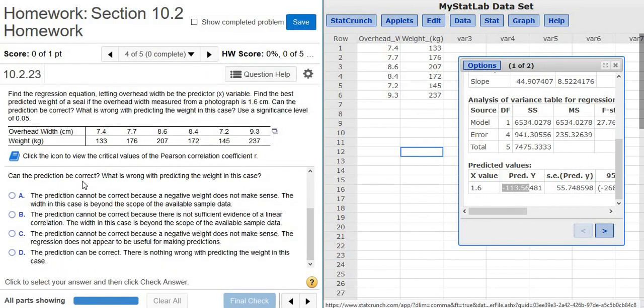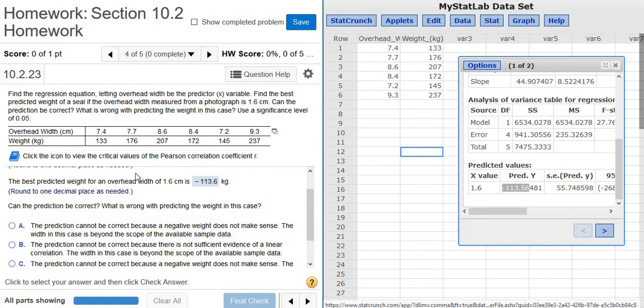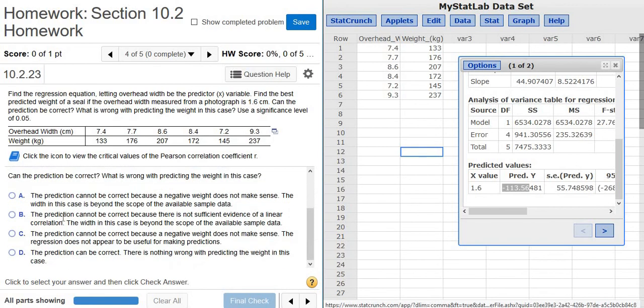It says, can the prediction be correct? What is wrong with predicting weight in this case? Well, it's a negative weight. And I think that happened because the 1.6 is really far away from these other numbers. So I'm going to say the prediction cannot be correct. So it's one of these three, because a negative weight does not make sense.